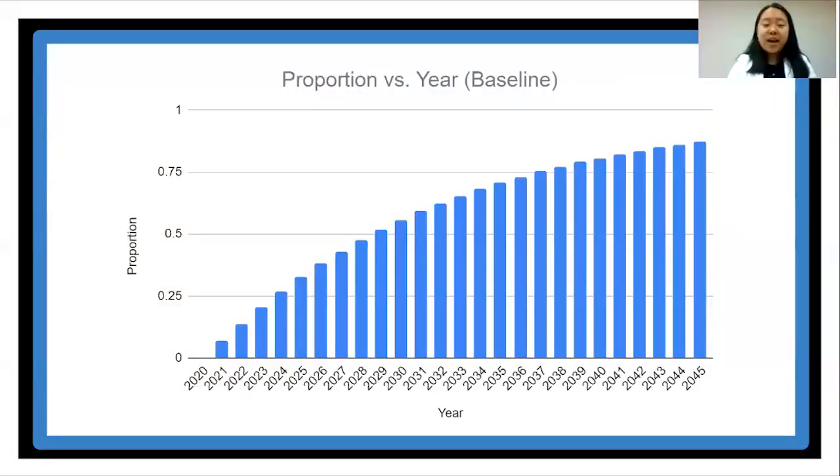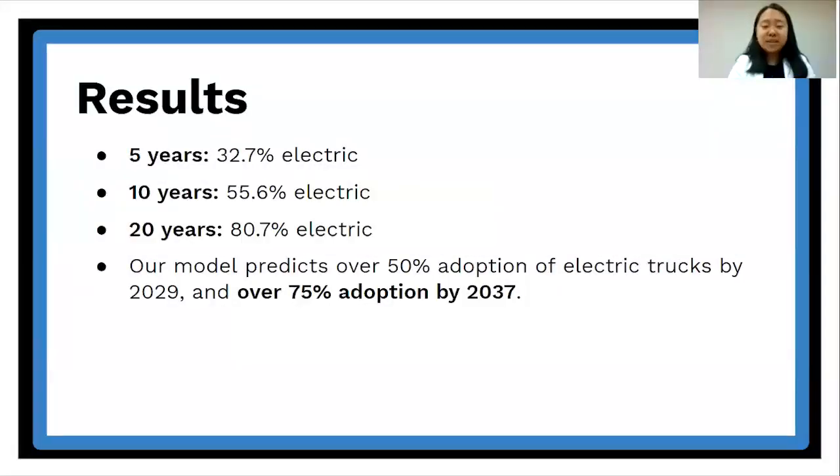we found that in five years, 32.7% of semi trucks on the road will be electric. And in 10 years, 55.6% will be electric. In 20 years, that would be 80.7%. Our model also predicts that over half of semi trucks on the road will be electric by 2029 and over three quarters will be electric by 2037.